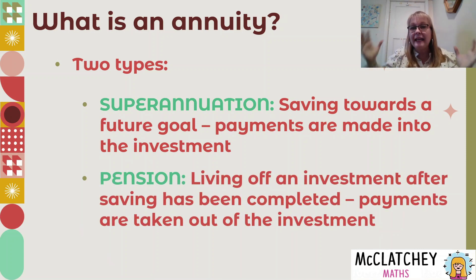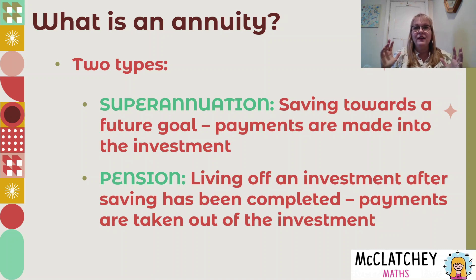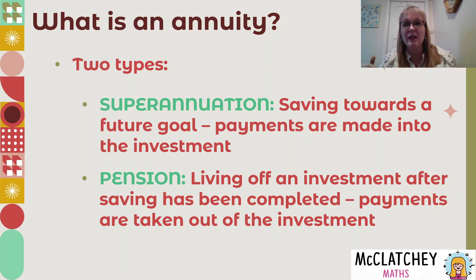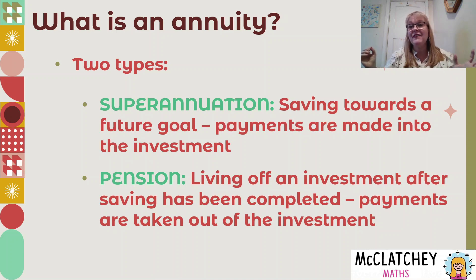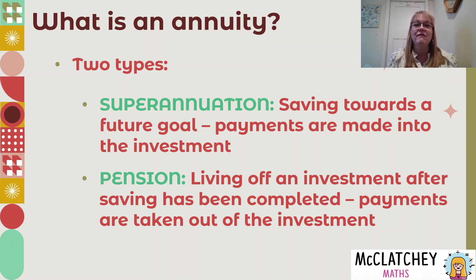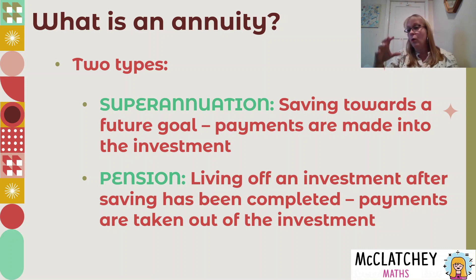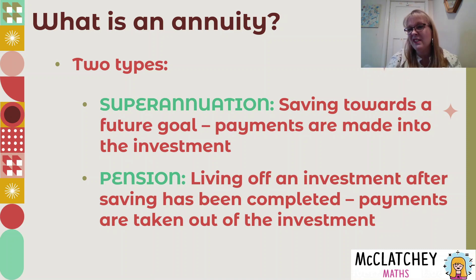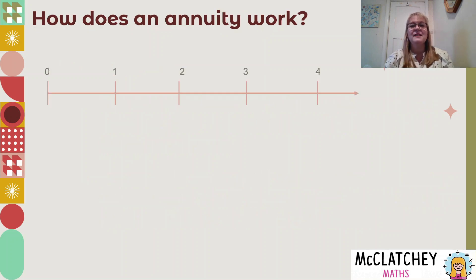The second type of annuity is a pension type. We've already saved, we've already completed our investment, we're now living off that investment in retirement and taking those payments out. We can think of it in two phases: firstly we put in and save for perhaps 40 years, then we get a big chunk of money and withdraw from it. So an annuity can change its nature throughout our lifetime — first putting in, then taking away.